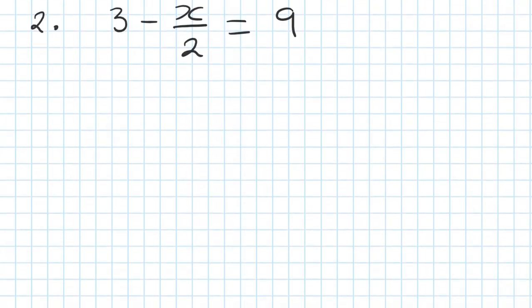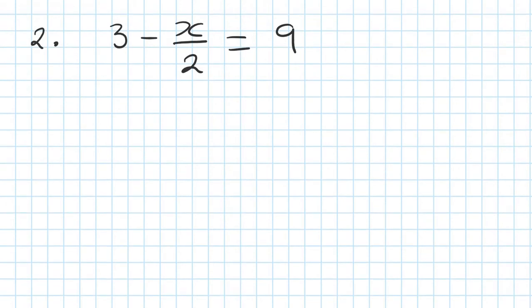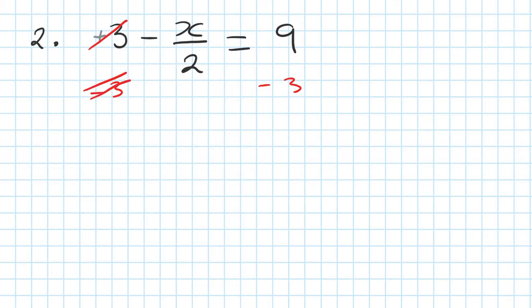Second one. 3 minus x over 2 is equal to 9. Remember, if there's nothing in front of the 3, no sign, it means positive — that means plus 3. So we get rid of the 3 first by minus 3 on both sides. This 3 disappears, so on the left you're left with minus x over 2 is equal to 6.